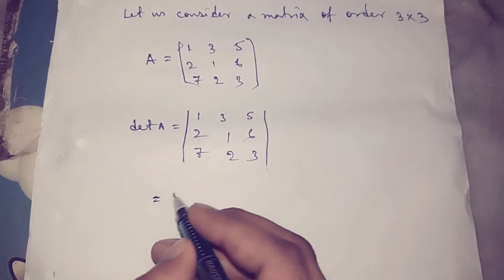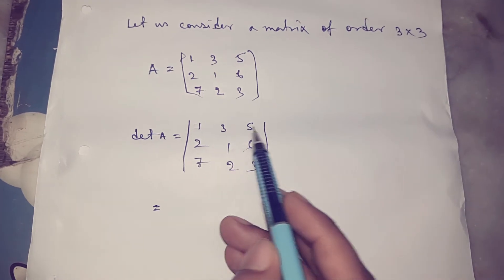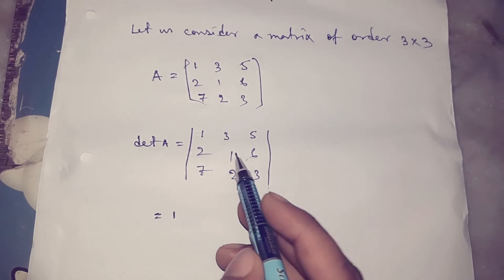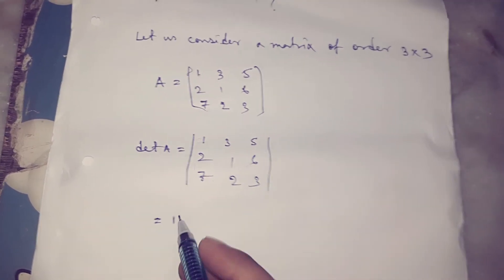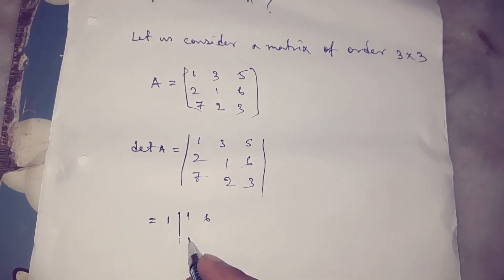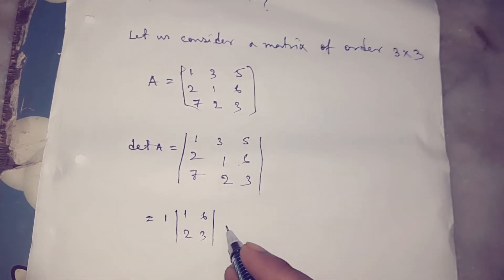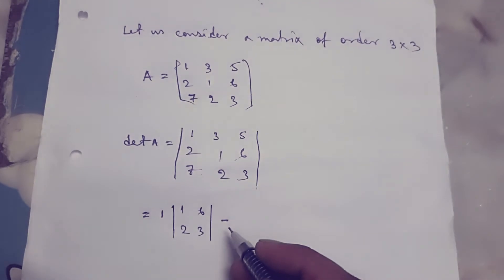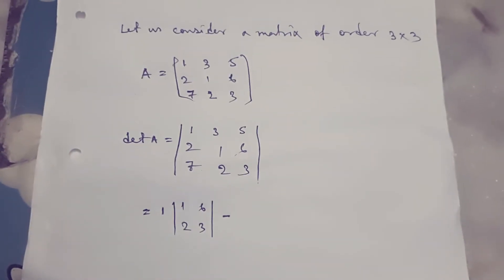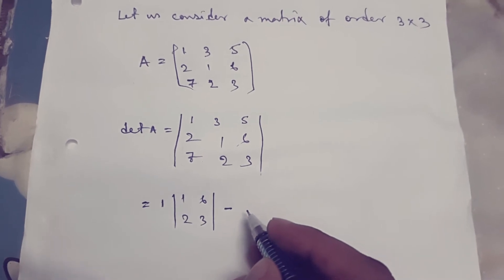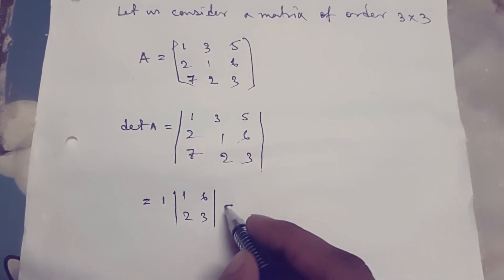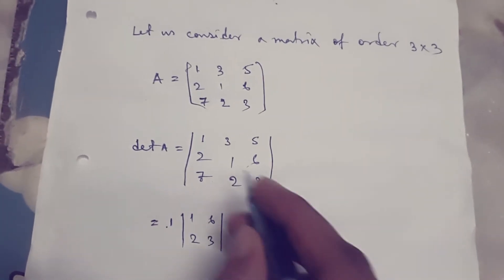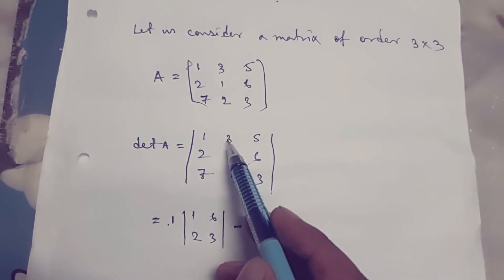First we take the first element of the first row and first column, which is 1, and the corresponding minor is 1, 6; 2, 3. This is a minus place. Always we take the minus sign here. Then this is plus and minus and plus. And we take 3.